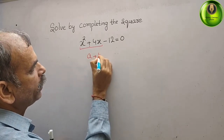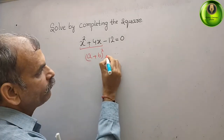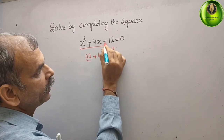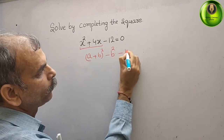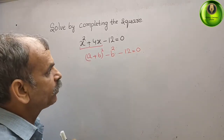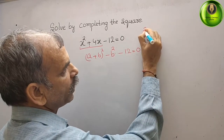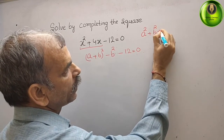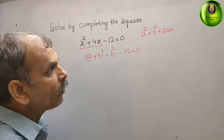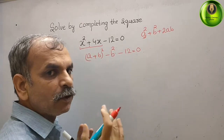We write (a plus b) whole square and subtract b squared, so minus 12 equals 0. First, we write the formula for (a plus b) whole square, which is a squared plus b squared plus 2ab. Comparing a squared with x squared, we get a is equal to x.